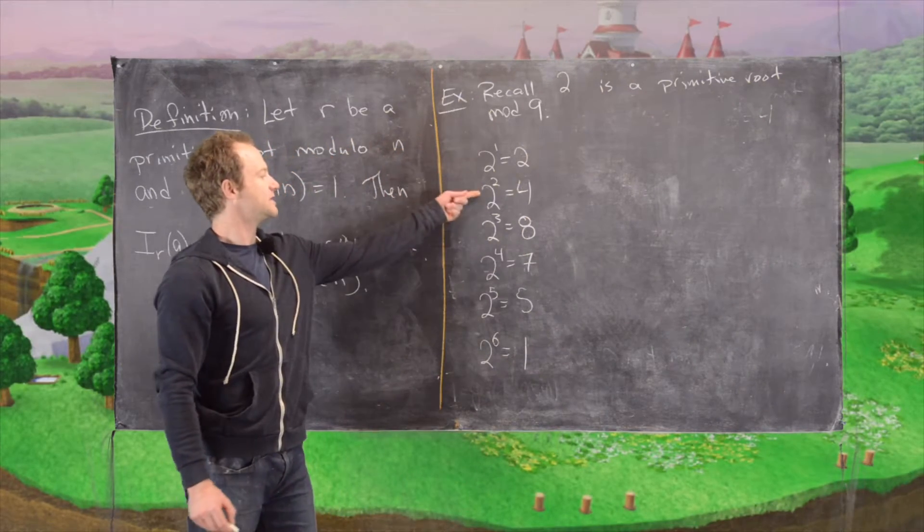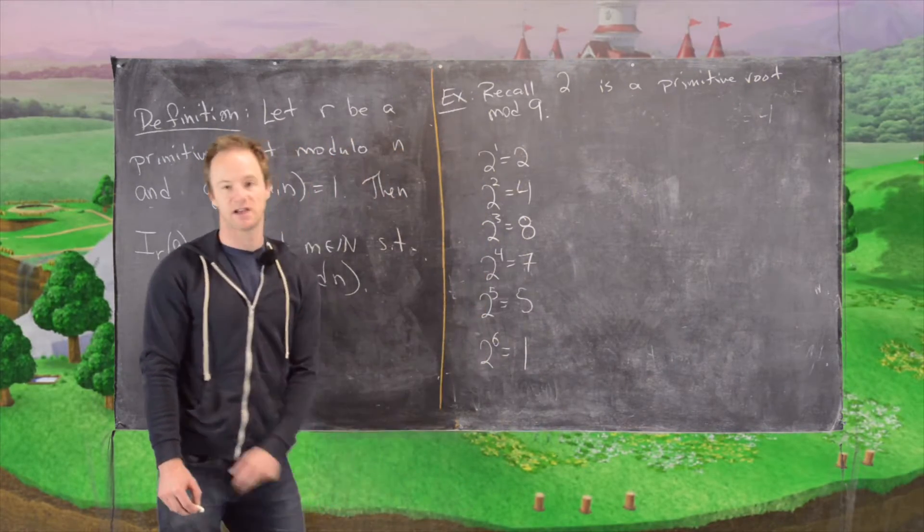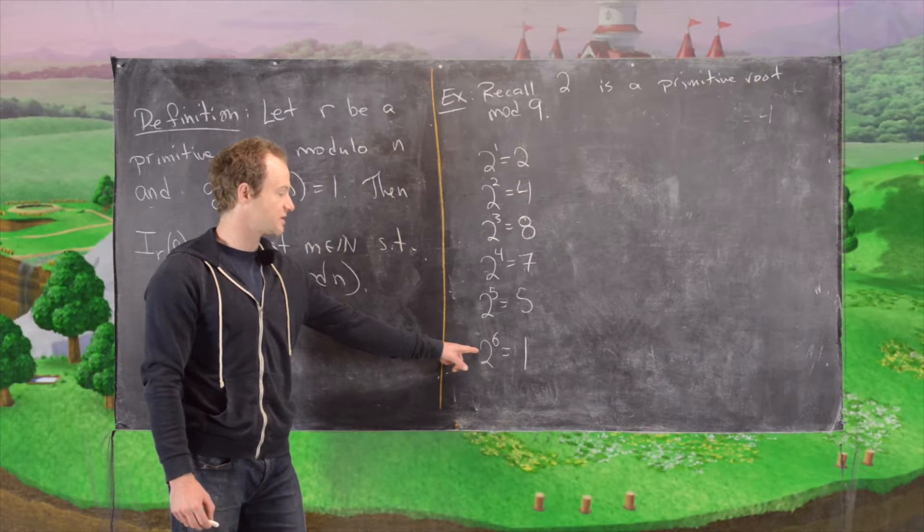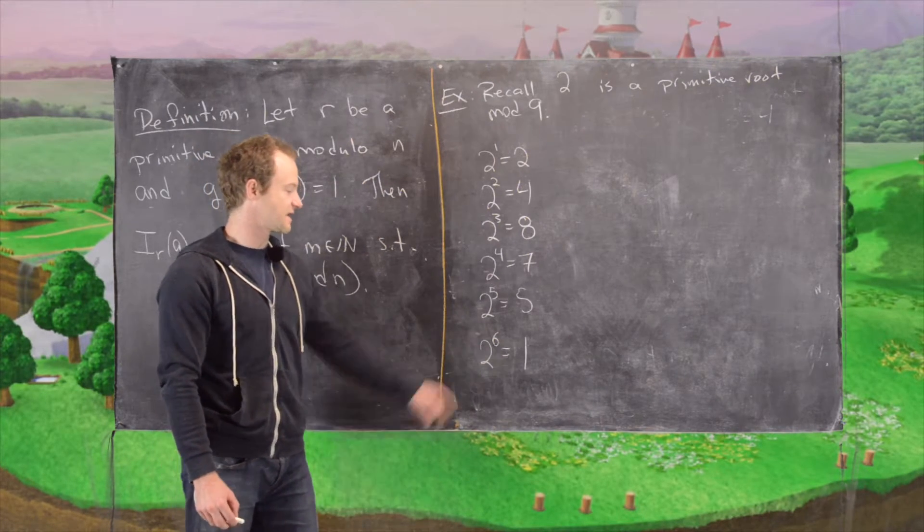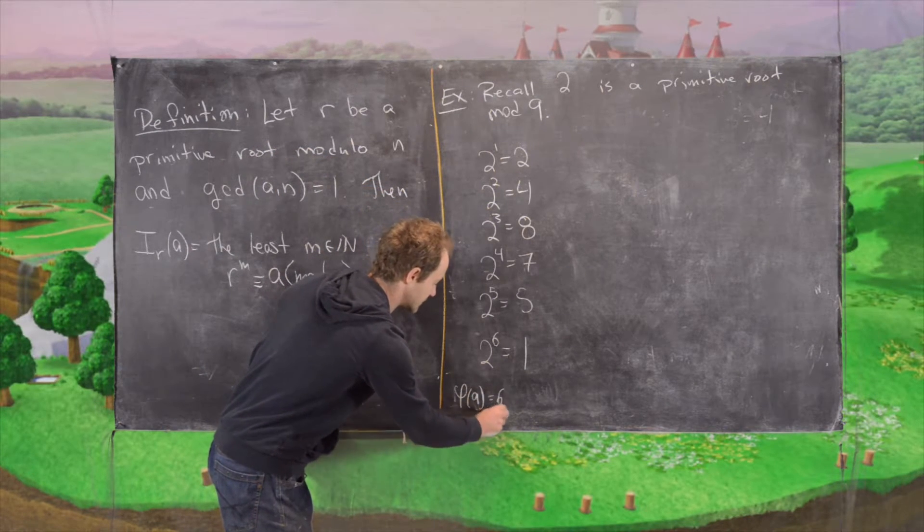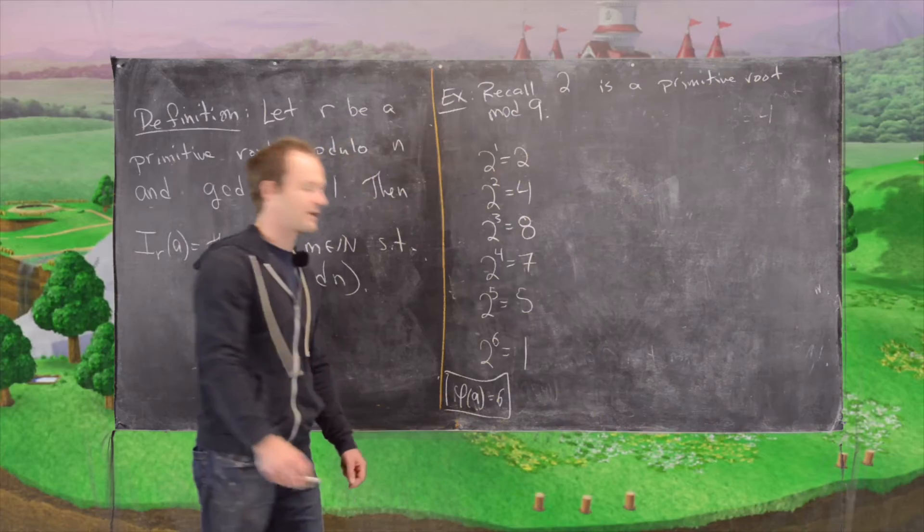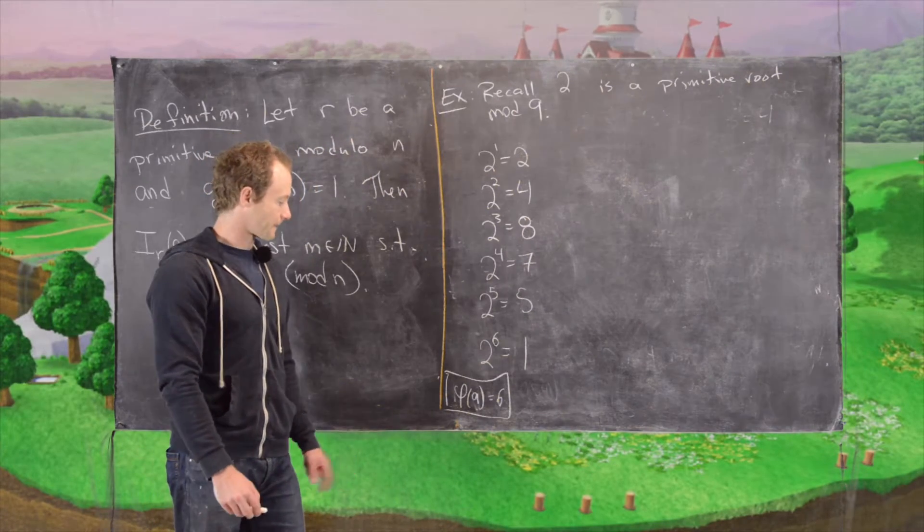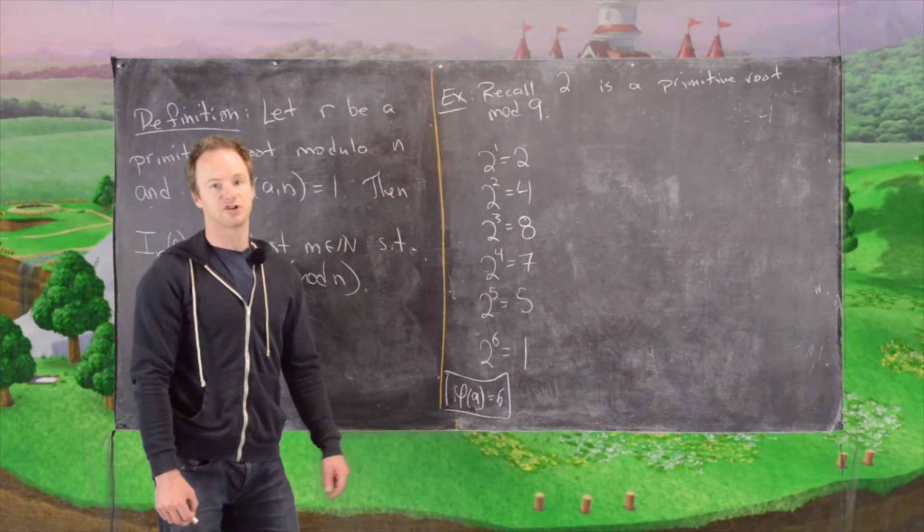So notice we got 1, 2, 3, 4, 5, 6 numbers here but we expected the order of 2 mod 9 to be 6 because let's recall that phi of 9 equals 6 and something's a primitive root if it gets that largest possible order.